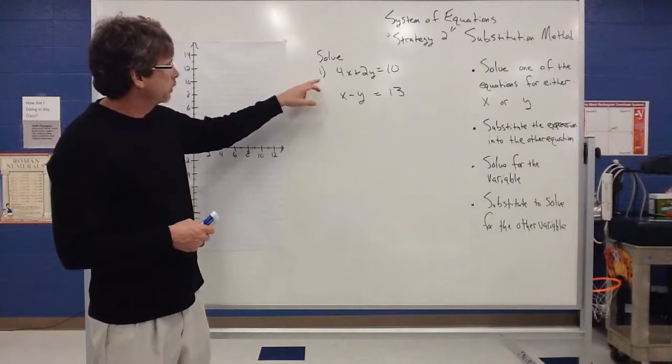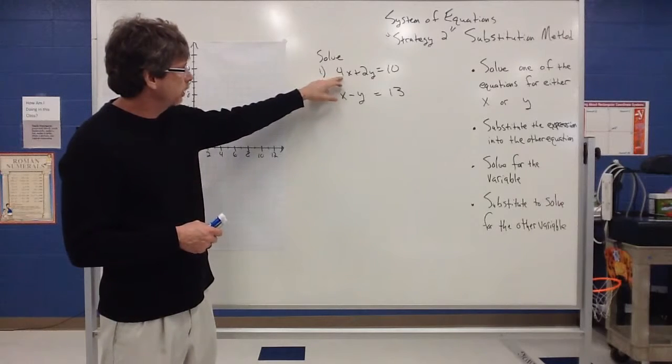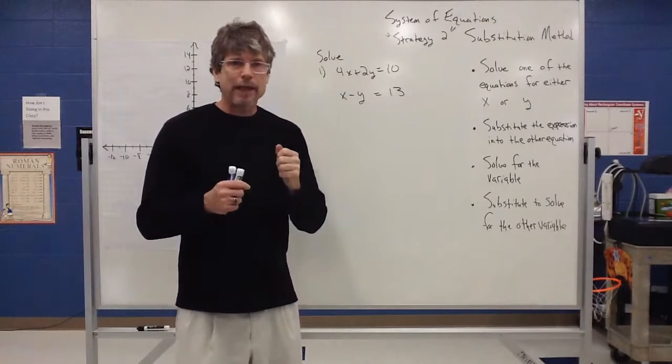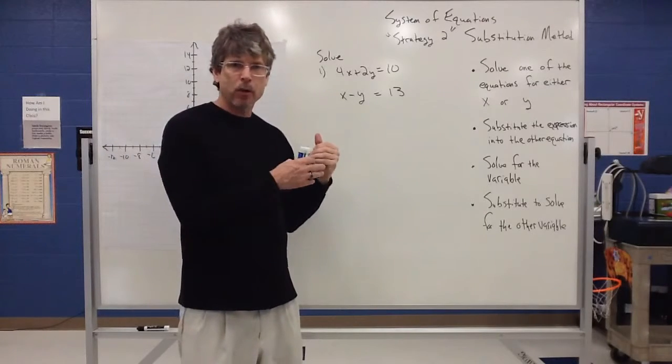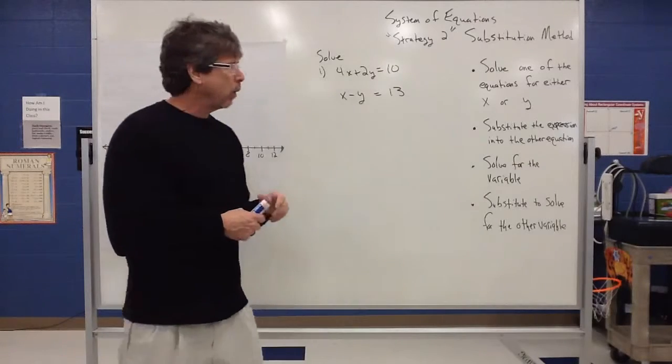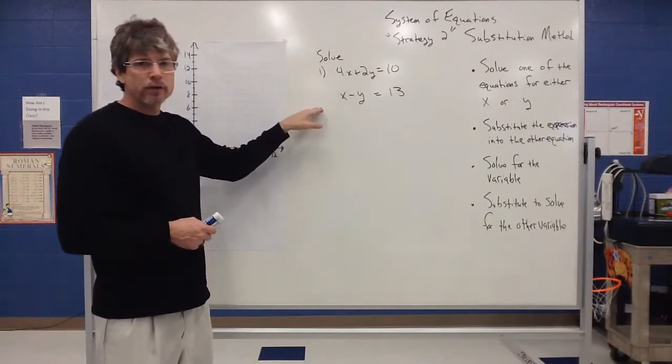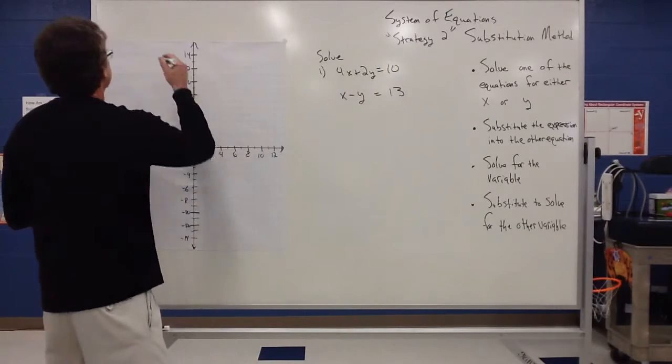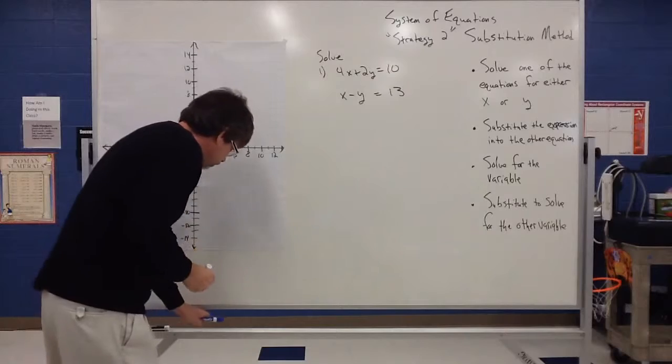Here's my system, I have 4x plus 2y equals 10, x minus y equals 13. What I'm looking for is that ordered pair that they both have that makes both of them true. Now one way of doing that is just find the point of intersection so I can graph these. So if I graph these, starting with this first one.